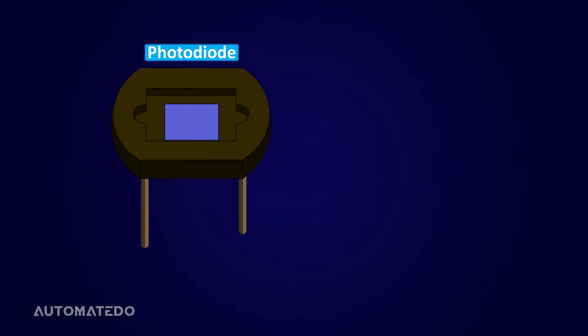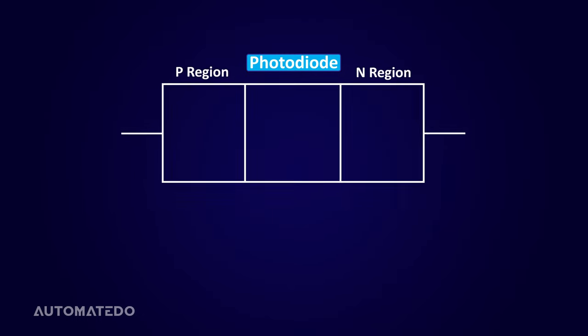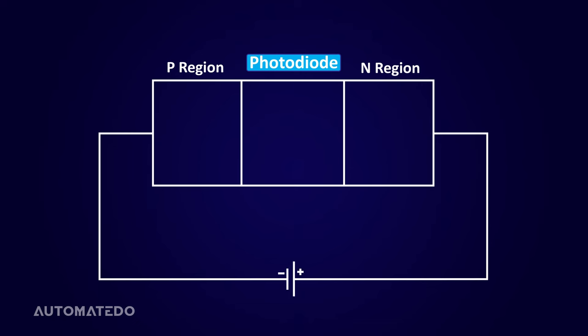Now, let us first consider what happens before we throw light on a photodiode. To do so, we need to see the inner structure of a photodiode. The photodiode has been especially designed to function in a reverse bias mode. What exactly is reverse biasing?